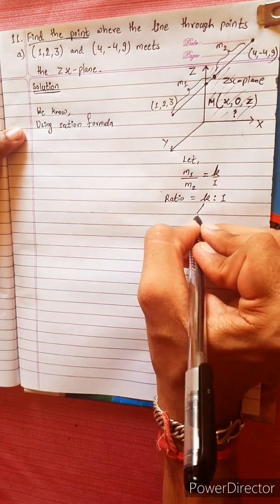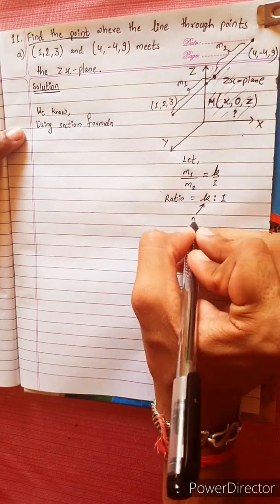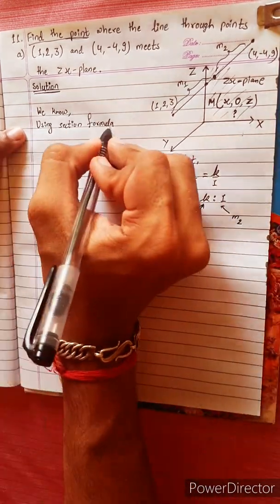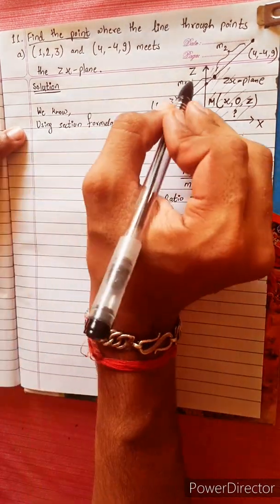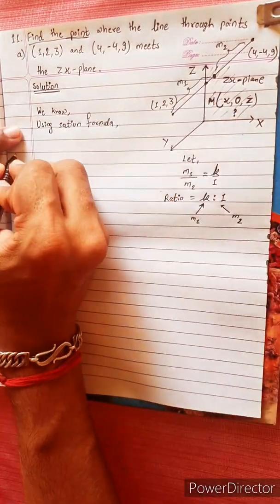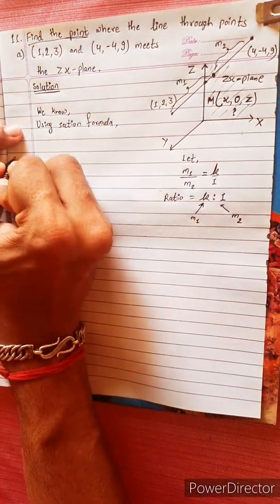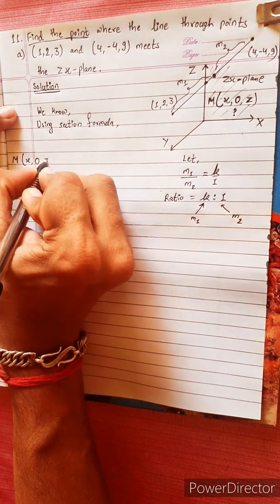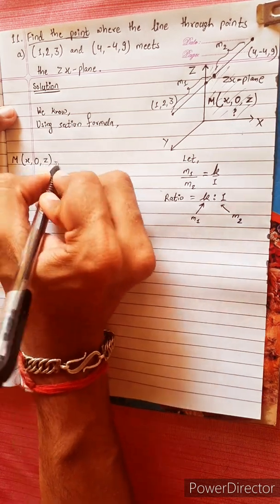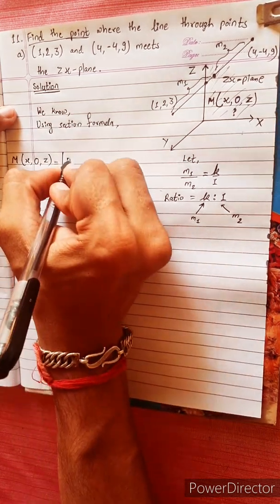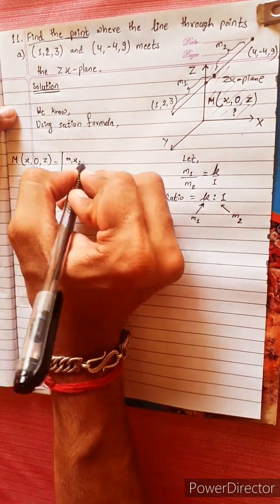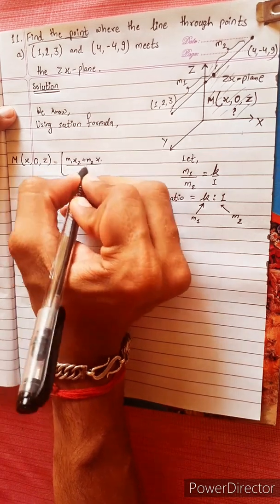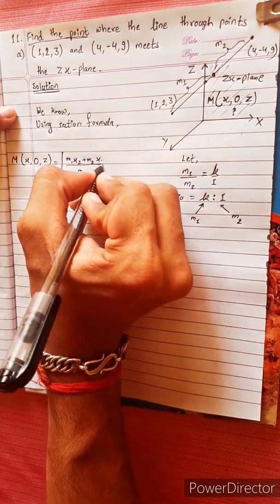This K then is one. The point belongs to M2. Add this point. This is M. The coordinates (x, 0, z) equal to: M1·x2 plus M2·x1 divided by M1 plus M2.